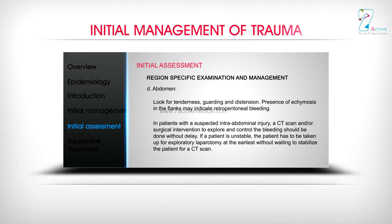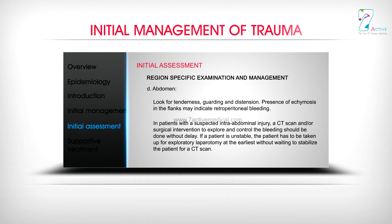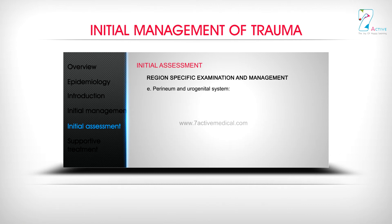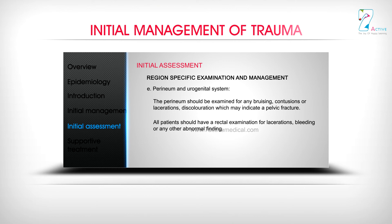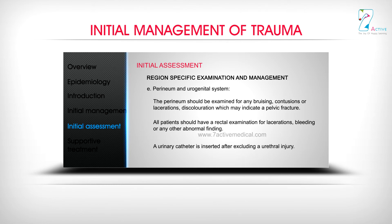In patients with a suspected intra-abdominal injury, a CT scan and/or surgical intervention to explore and control bleeding should be done without delay. If a patient is unstable, they must be taken for exploratory laparotomy at the earliest without waiting to stabilize for a CT scan. The perineum should be examined for any bruising, contusions, lacerations, or discoloration which may indicate a pelvic fracture. All patients should have a rectal examination for lacerations, bleeding, or any other abnormal findings. A urinary catheter is inserted after excluding a urethral injury.